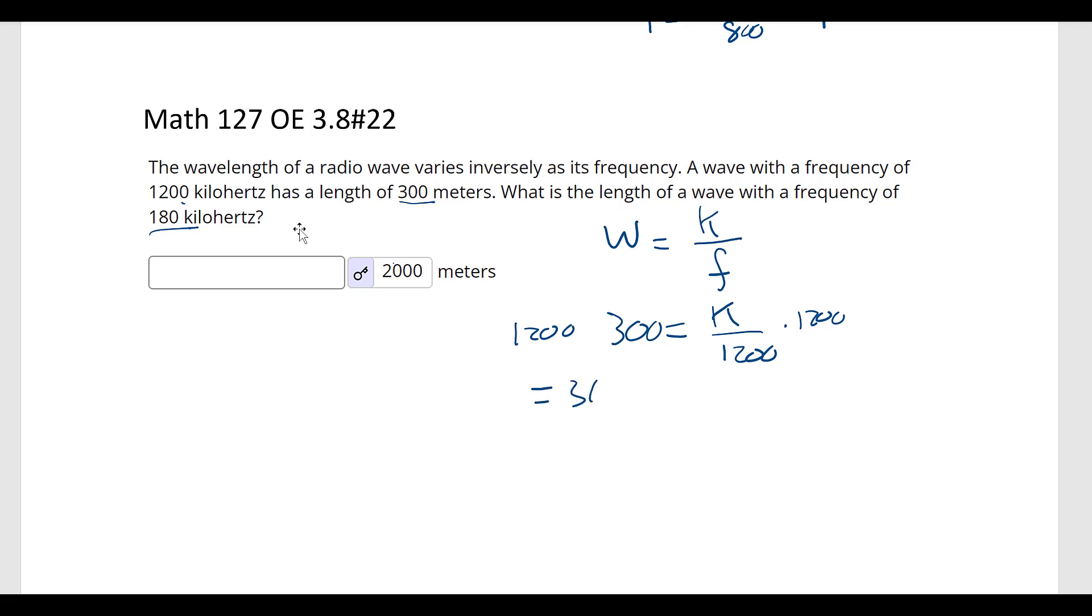We're going to get 36 with 1, 2, 3, 4 zeros is our k. So W equals 360,000 divided by f. So we're looking at 360,000 divided by 180. So that's going to cancel. And then 18 goes into 36 two times, so it's 2,000 is our wavelength. That's what we have here, 2,000.